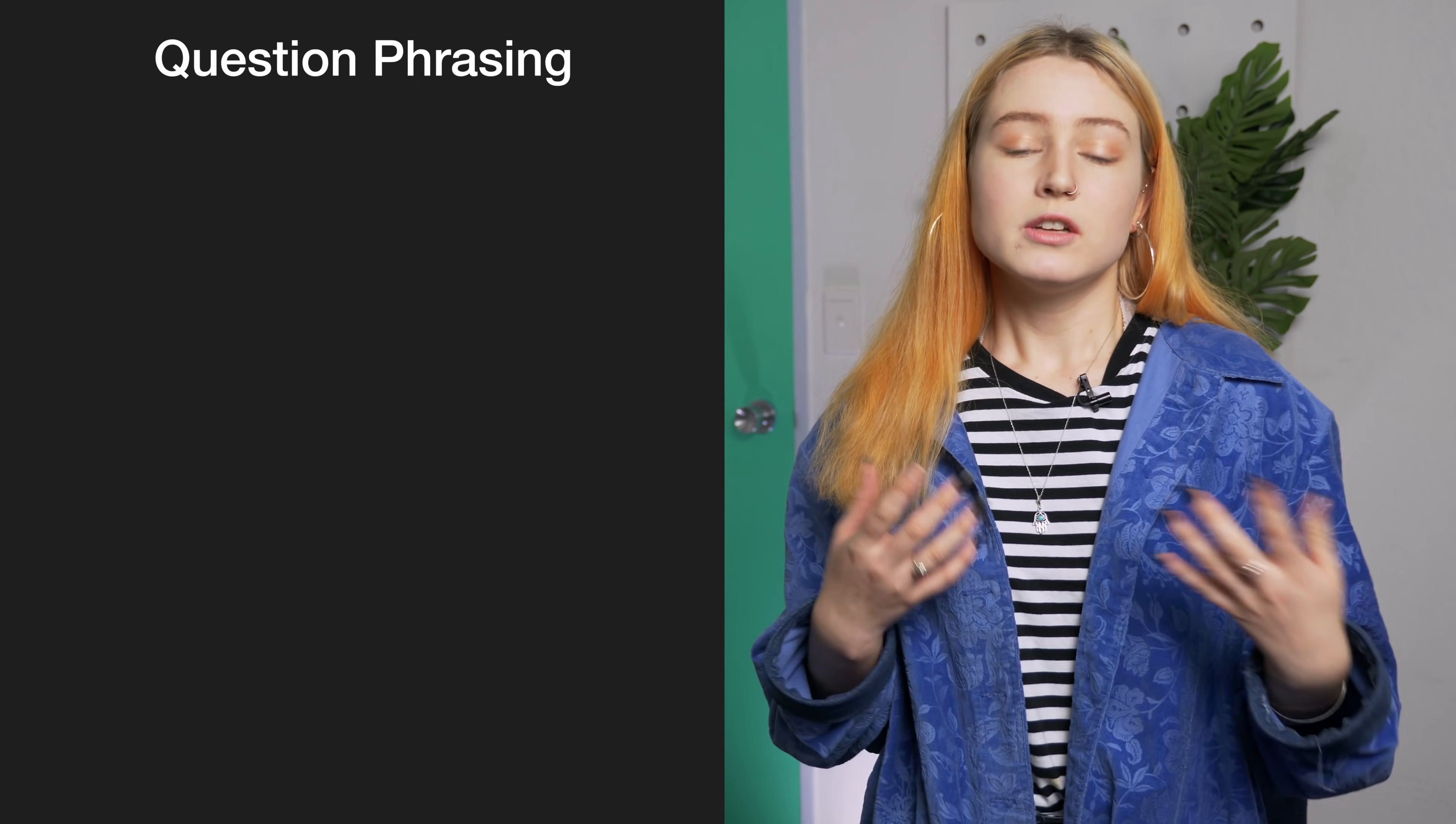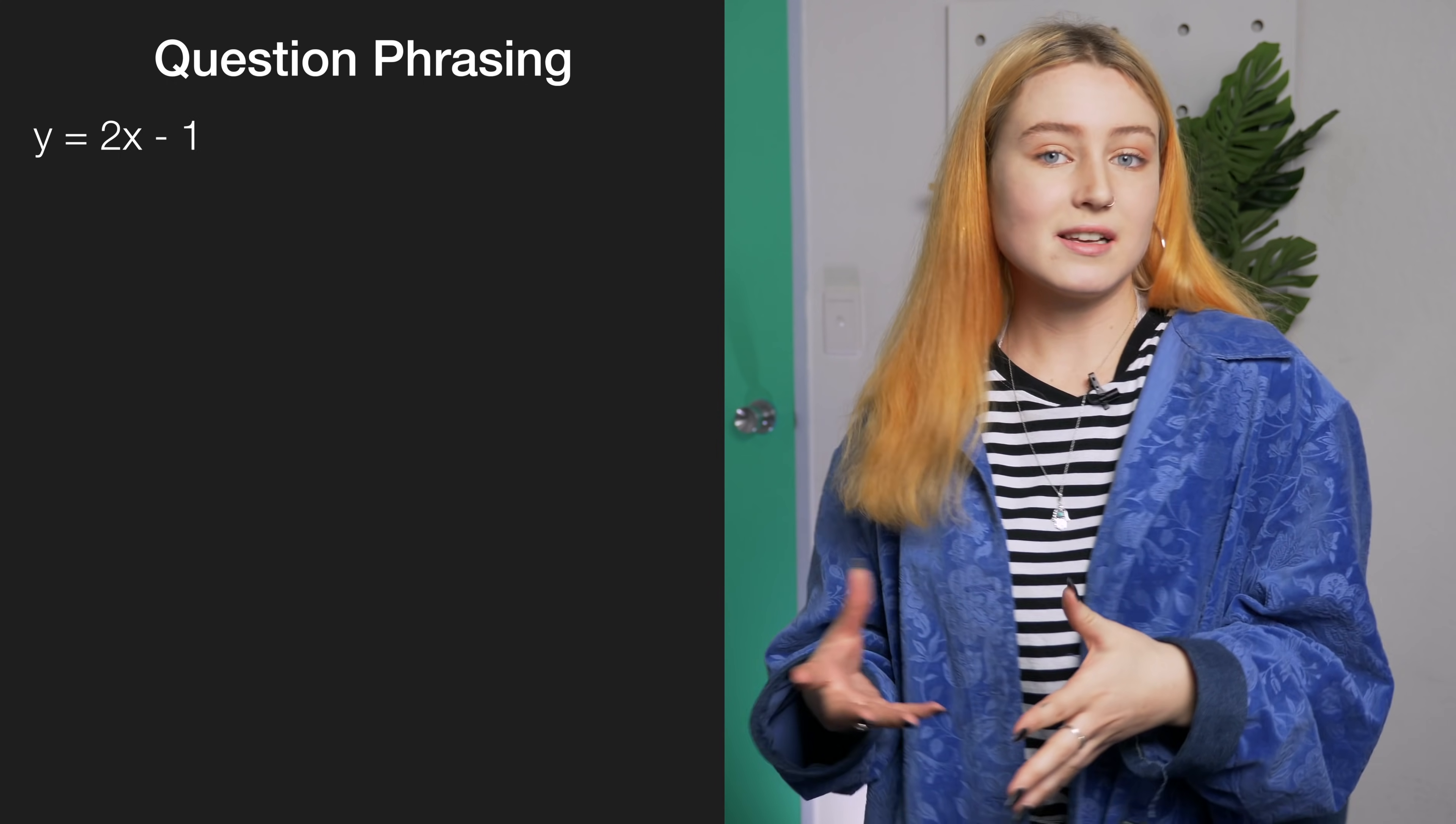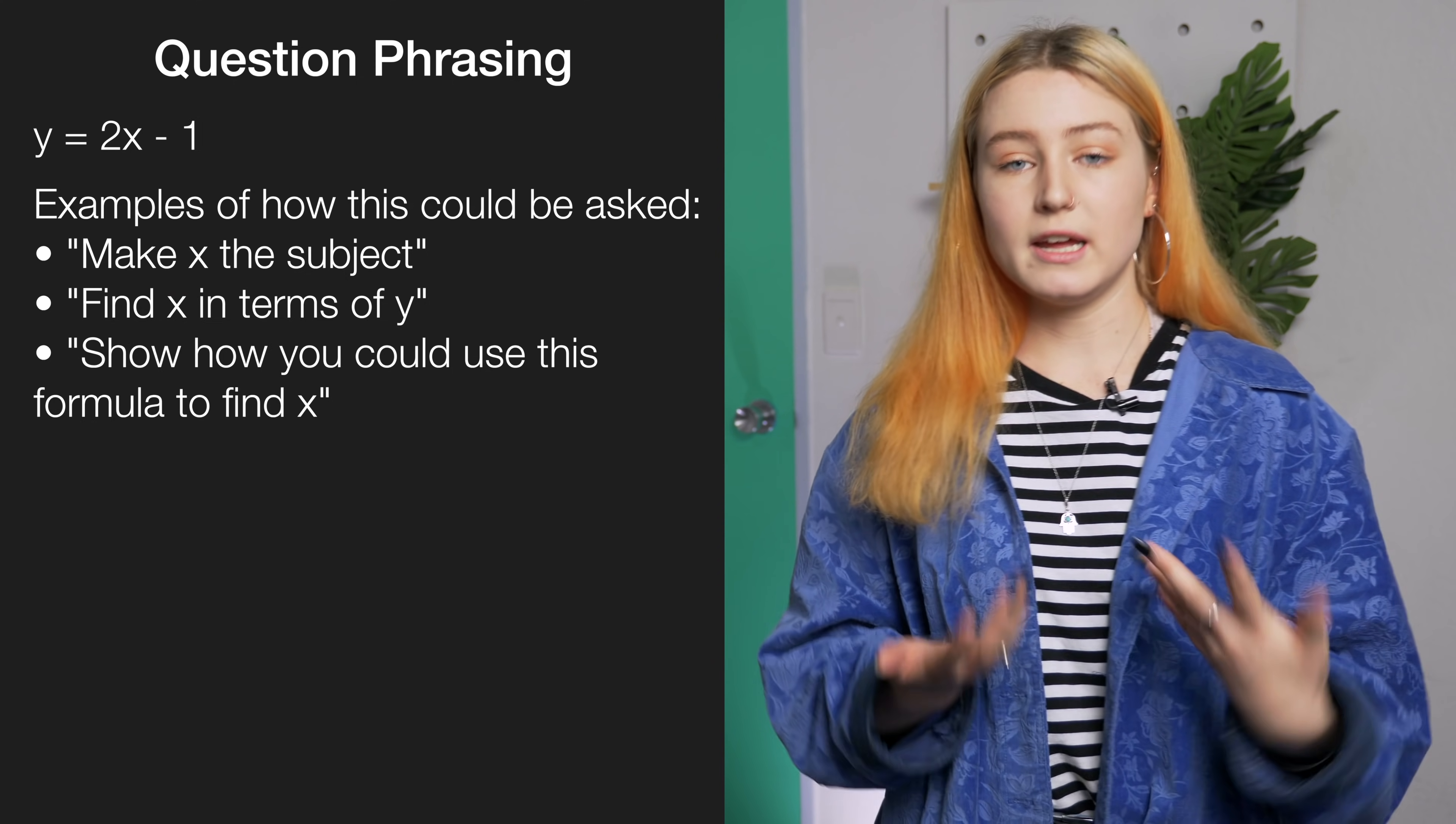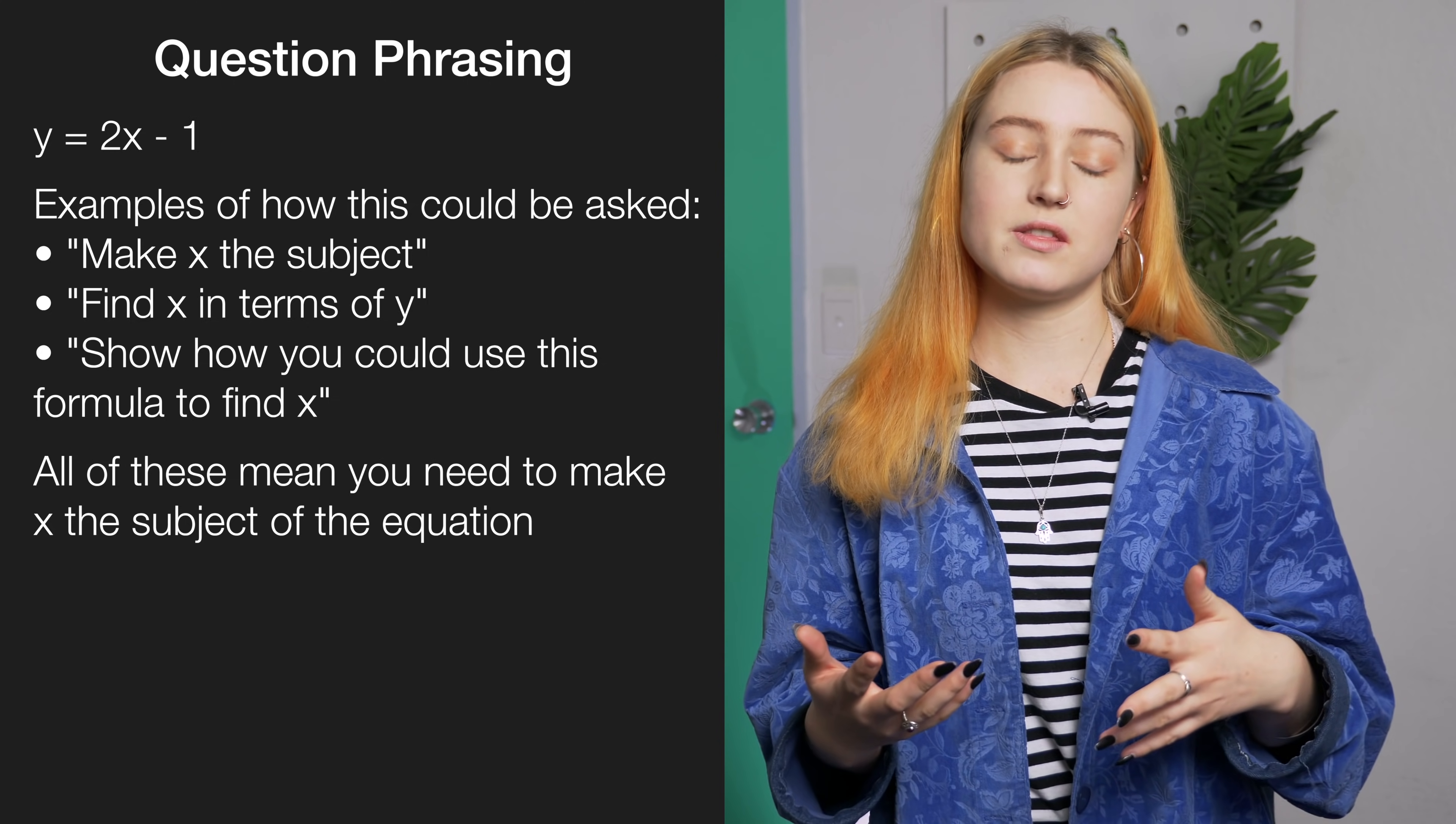So there are a lot of ways that examiners can phrase the question that all mean the exact same thing. So take the equation y equals 2x minus 1. For example you can be asked about three different ways for the exact same answer. So for example you can ask make x a subject, find x in terms of y, or show how you could use y to find x. All you have to do for this is make x the subject of the equation which means putting it on its own and taking everything else on the other side of the equal sign.